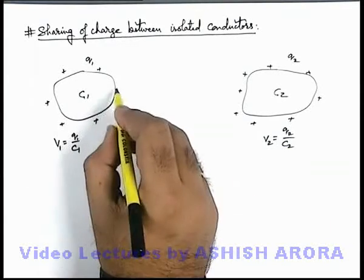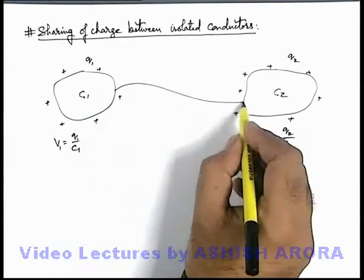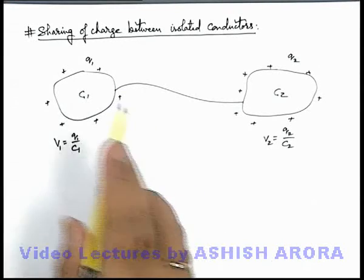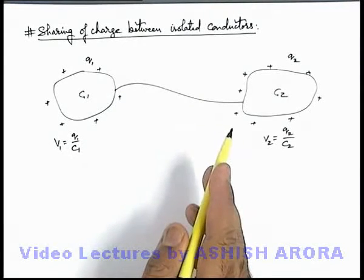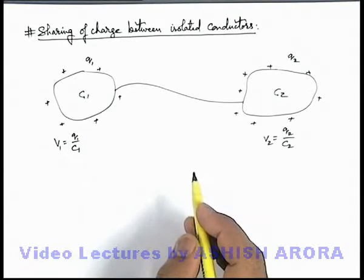Now in this situation, if via conducting wire we connect the two conductors, then obviously charge sharing will take place between the two till their final potential becomes equal.